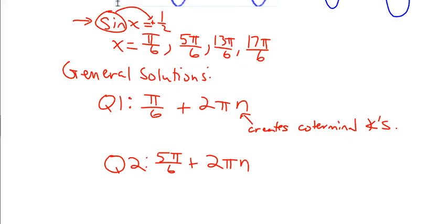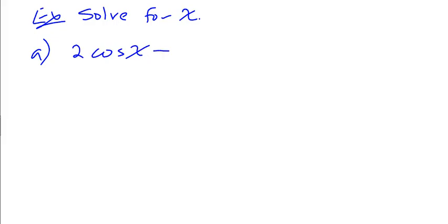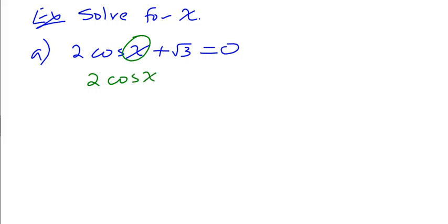Of course, we don't want to graph this every time, so we want to use our charts to solve. Let's look at an example: solve for x in 2 cosine of x plus the square root of 3 equals 0. Don't lose sight of this — I'm still solving equations like I've always done in Algebra 1, Algebra 2, or Trigonometry. Since there's only a single x here, I can isolate it using the opposite of the order of operations. First, subtract the square root of 3: I get 2 cosine of x equals negative square root of 3. Then divide both sides by 2.